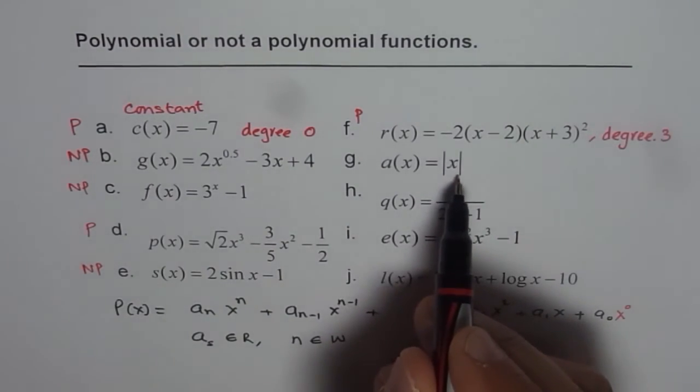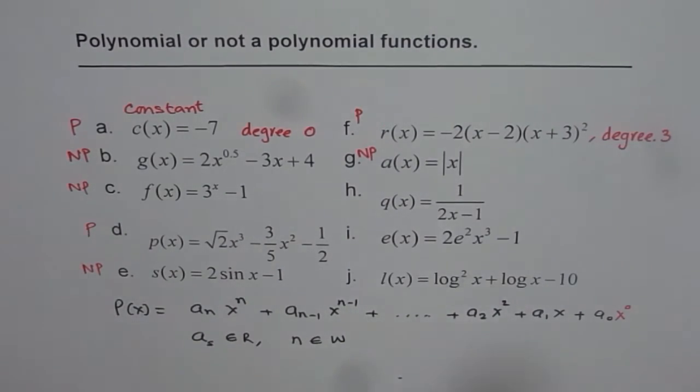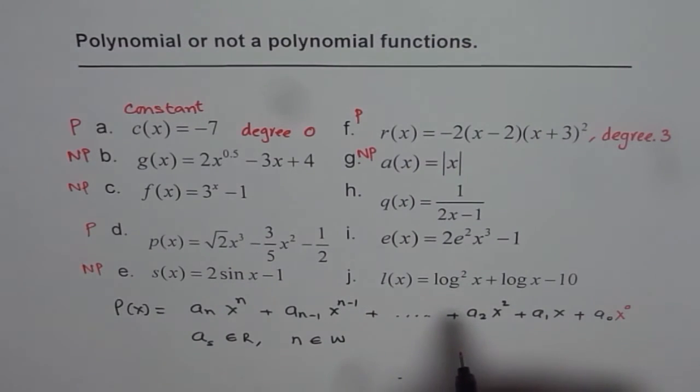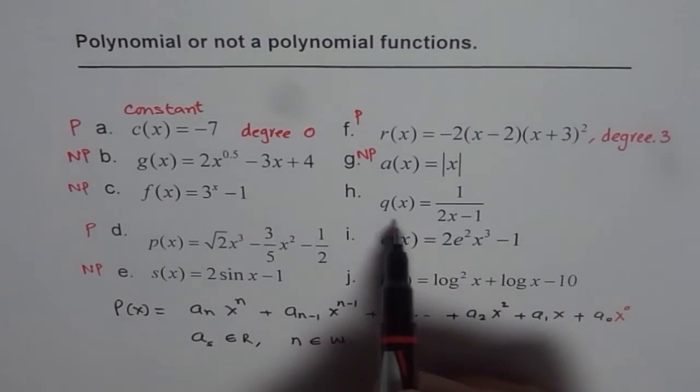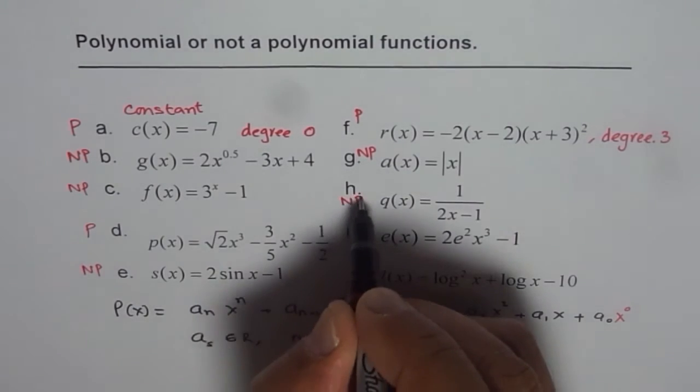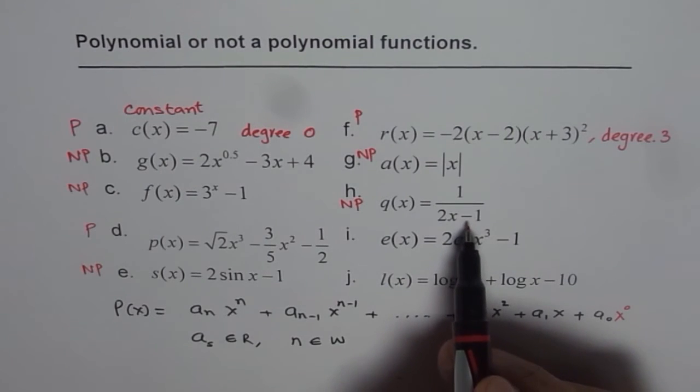Absolute function is not a polynomial. So let me write NP here, that means not a polynomial, since this will have a corner. Polynomials do not have a corner in their graph. Now Q of x equals to 1 over 2x minus 1 is not a polynomial. This will have vertical asymptote, and also a horizontal asymptote. That is a rational function.